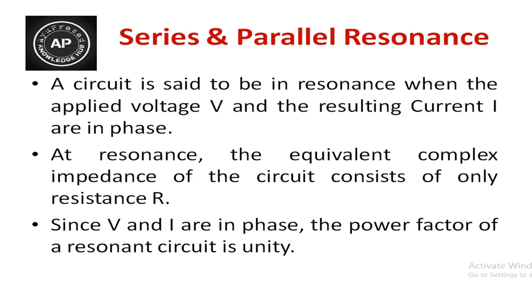A circuit is said to be in resonance when the applied voltage V and the resultant current I are in phase. If a circuit has only resistance, then the applied voltage and current are in phase. At resonance, the voltage and current are in phase, meaning the phase shift is either zero degrees or 360 degrees.